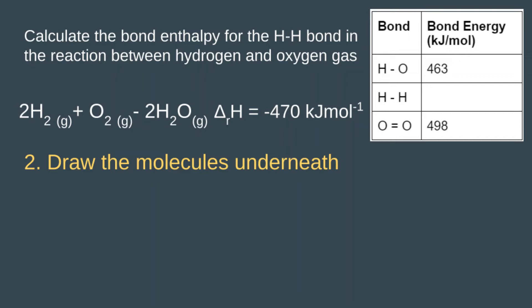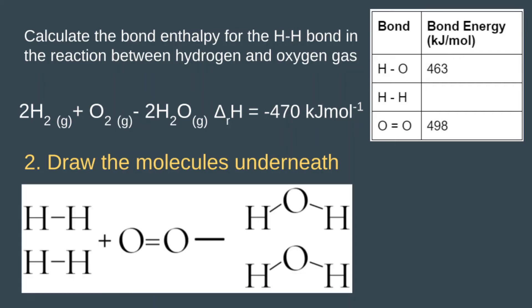This time we want to include our enthalpy change in our equation. The second step is also the same — we draw the structure of each reactant and product underneath the equation, keeping the minus between the reactants and the products.